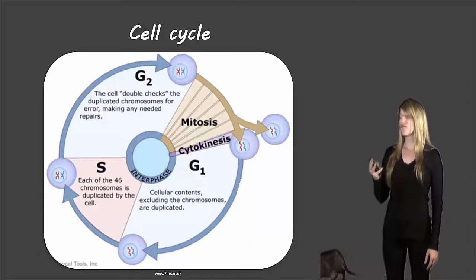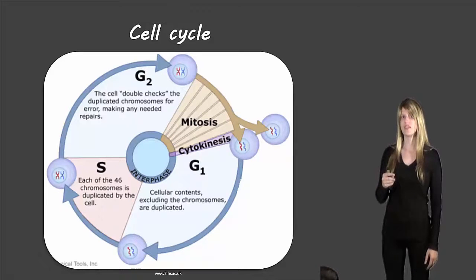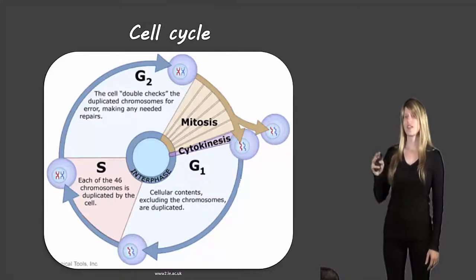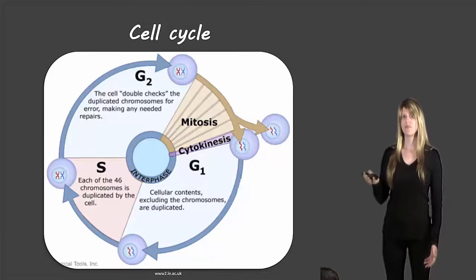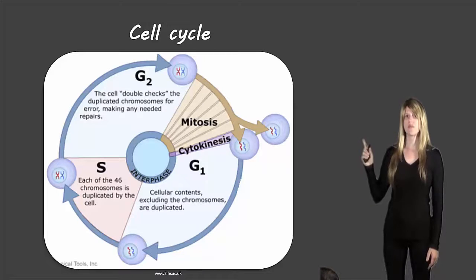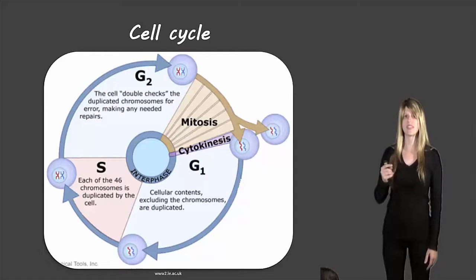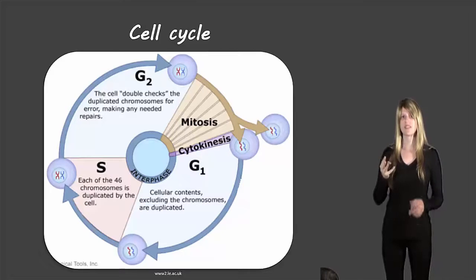There are three steps to the cell cycle. The first is interphase, shown in the blue part. It's split into three different parts: G1 or GAP1, S which stands for synthesis, and G2 or GAP2. Then we have mitosis, shown in brown, which has several steps. And the last one, shown in purple, is cytokinesis. So those are the three parts of the cell cycle: interphase, mitosis, and cytokinesis.